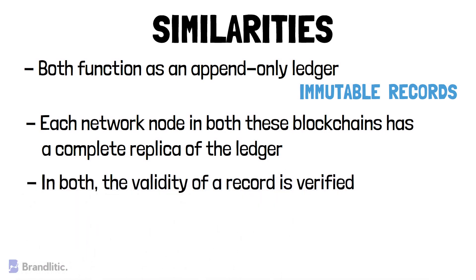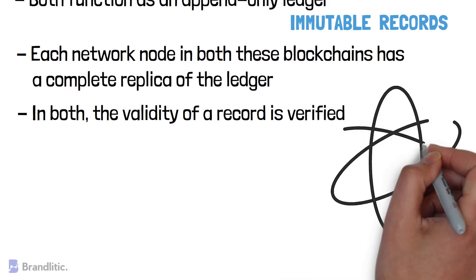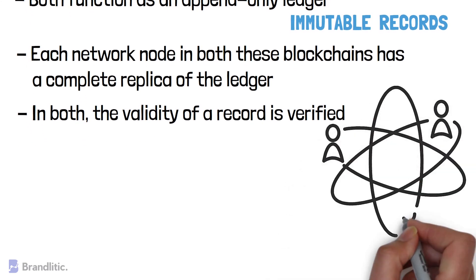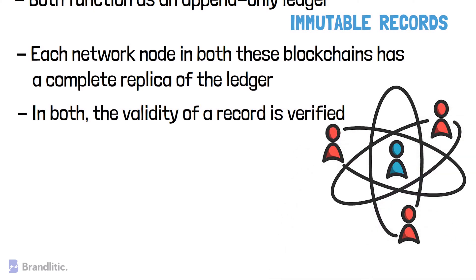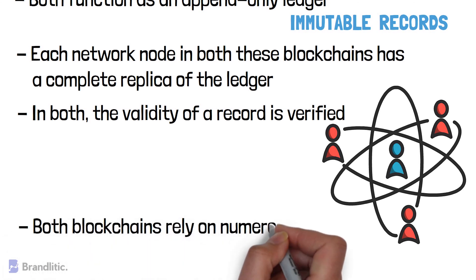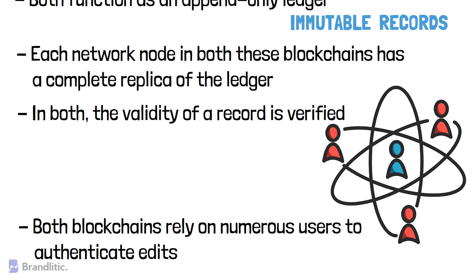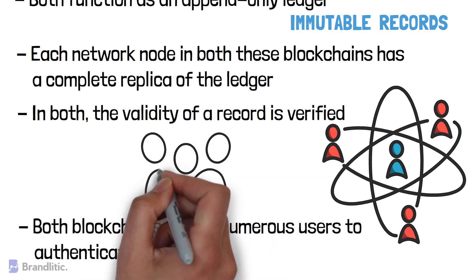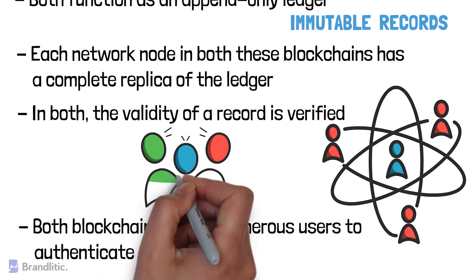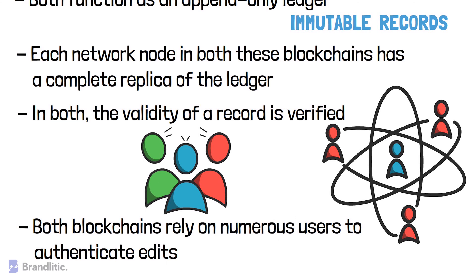Third, in both, the validity of a record is verified, thus providing a considerable level of immutability until the majority of the participants agree that it is a valid record and reach consensus. This further helps to prevent tampering with records by any third party. Fourth, both blockchains rely on numerous users to authenticate edits to the distributed ledger, thus helping in the creation of a new master copy which can be accessed by everyone at all times.